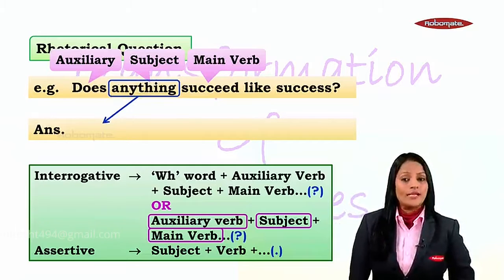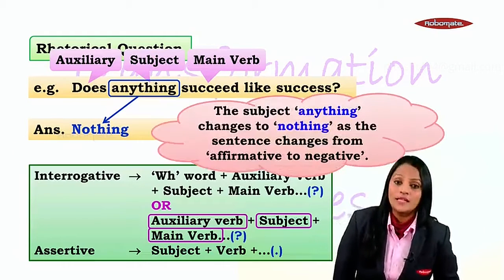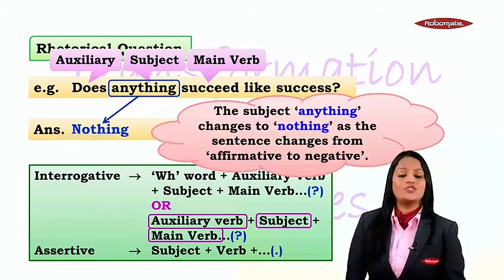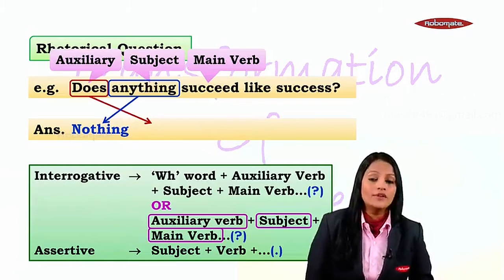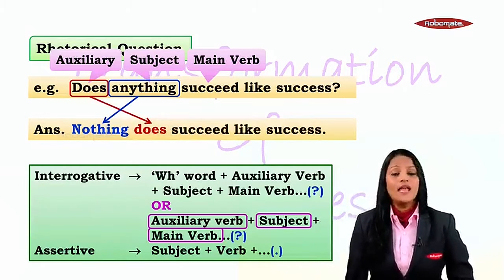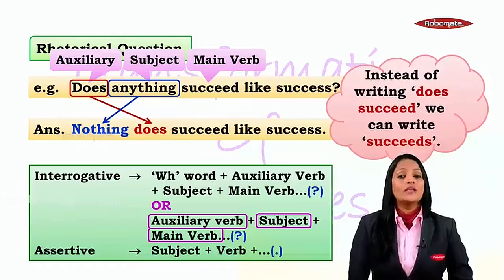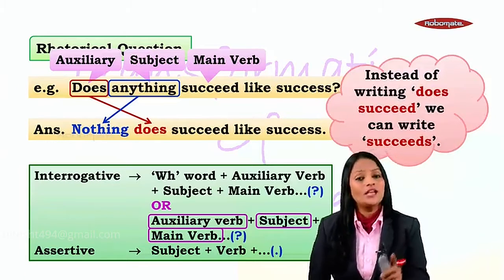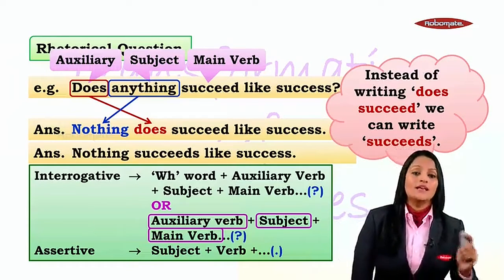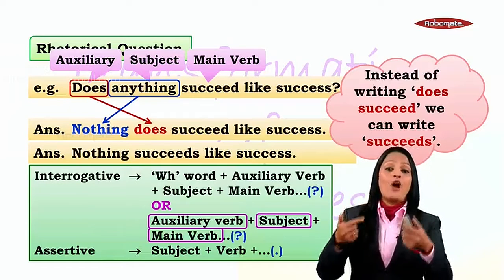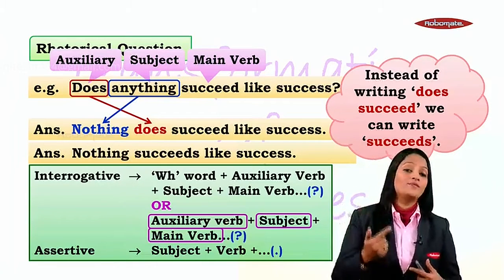When we change to assertive, the subject comes first. Remember: since the interrogative is affirmative, it becomes negative. So 'anything' becomes 'nothing' — the subject changes as the sentence moves from affirmative to negative. Then we write the auxiliary 'does' and the main verb 'succeed,' then the rest, and a full stop. So: 'Nothing does succeed like success.' Instead of writing 'does succeed,' we can write 'succeeds.' The answer is: 'Nothing succeeds like success.'